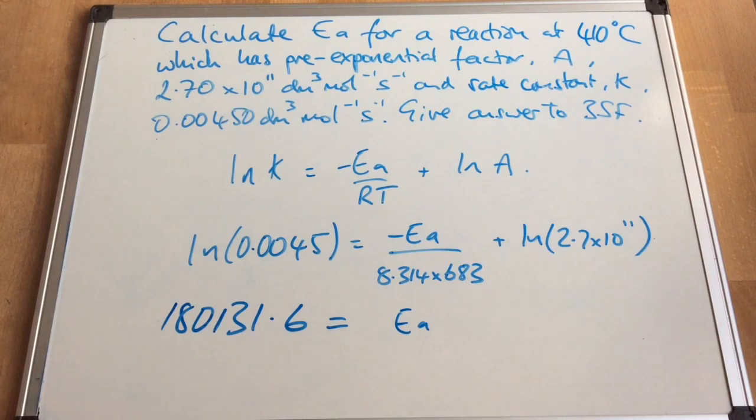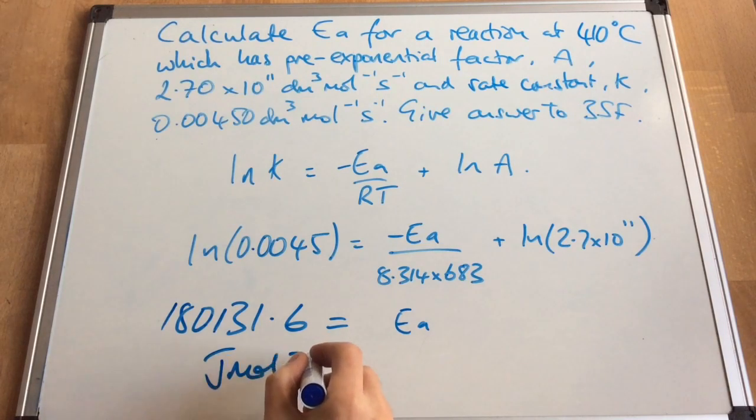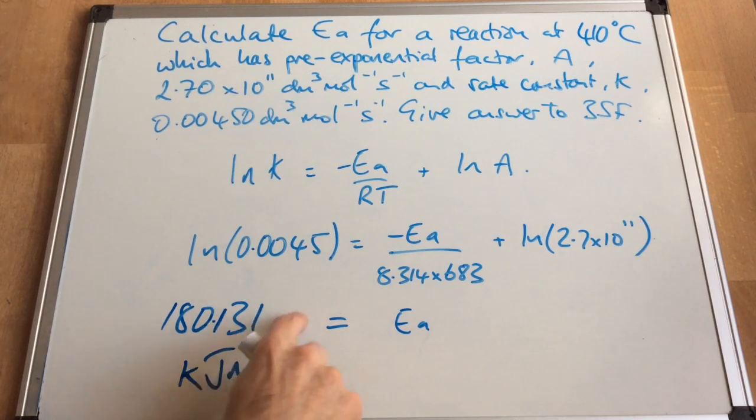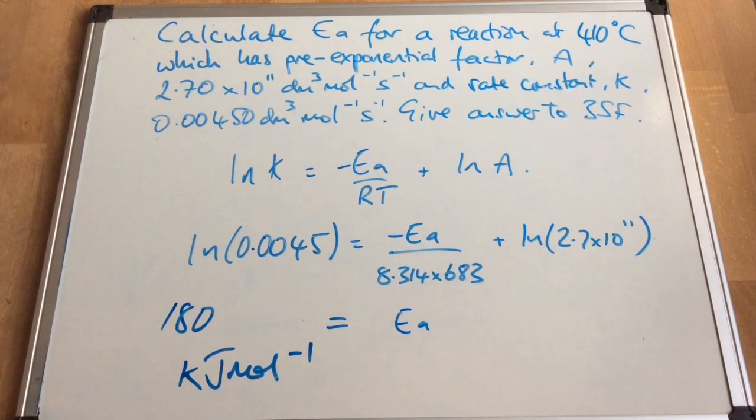Now the units we're in at the moment are joules per mole. And we would normally express activation energy in kilojoules per mole. So we need to bring this down by a factor of 1,000 to get it into the right unit. And then the last thing we need to do is get the three significant figures, so it's just that 180 there. So there's the final answer, 180 kilojoules per mole.